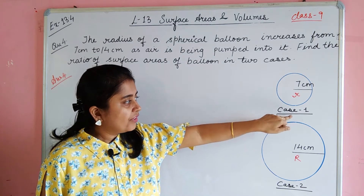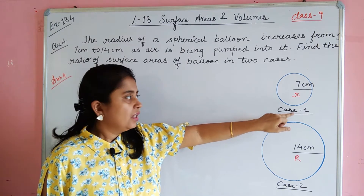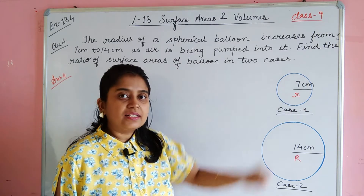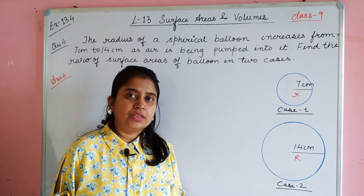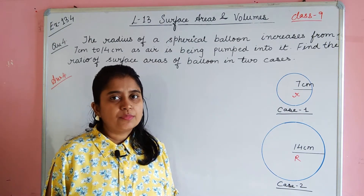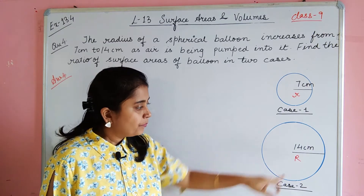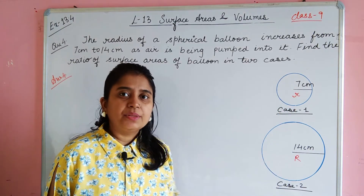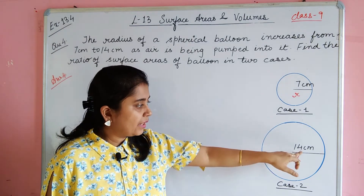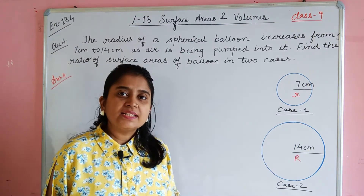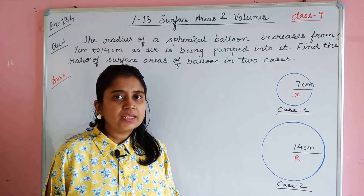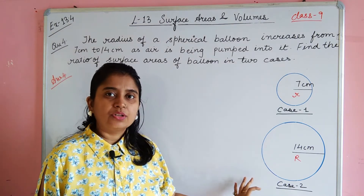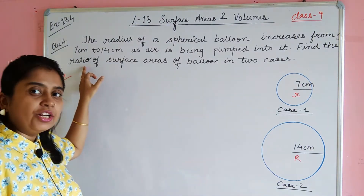In the first case, the radius of the balloon is 7 cm. And in the second case, when we pump the air in, the radius increases from 7 cm to 14 cm. So now in the second case, the surface area of the balloon is found by its ratio.